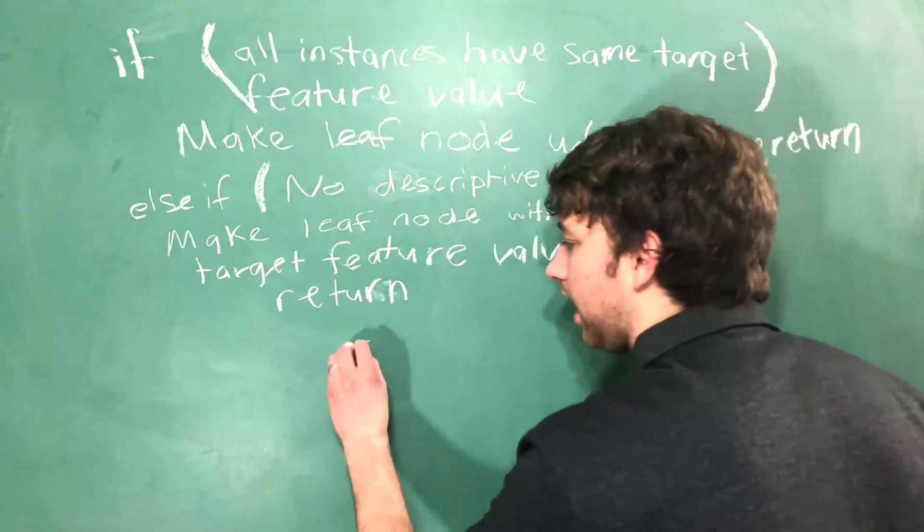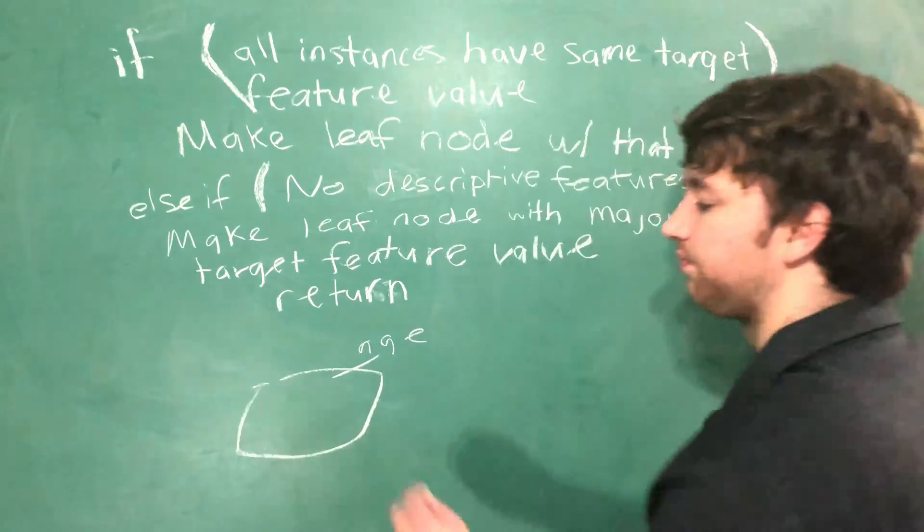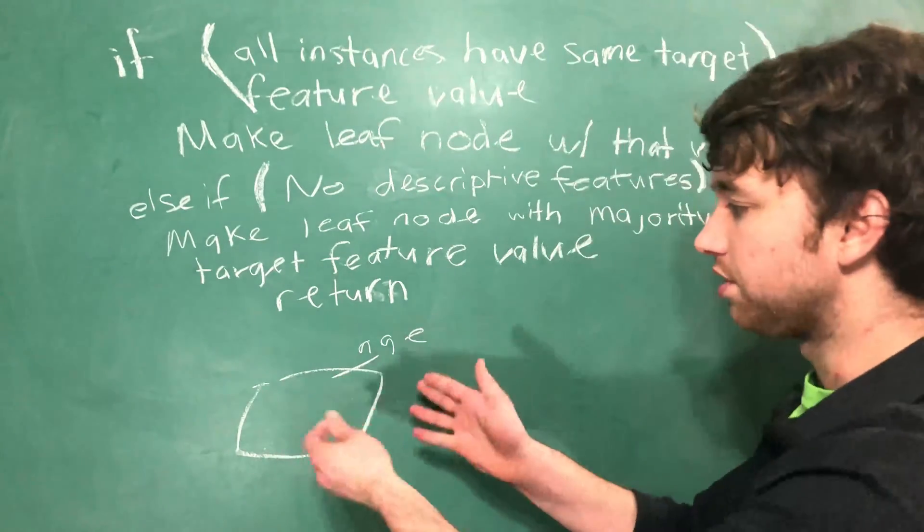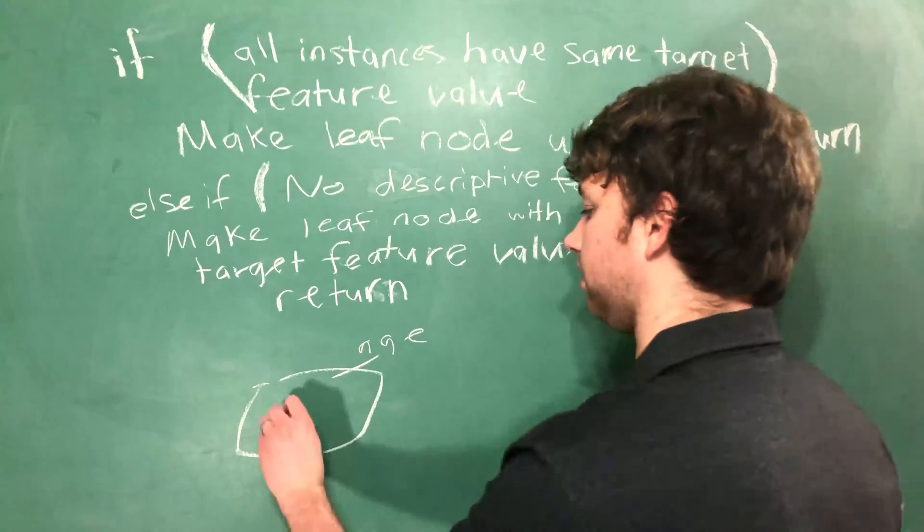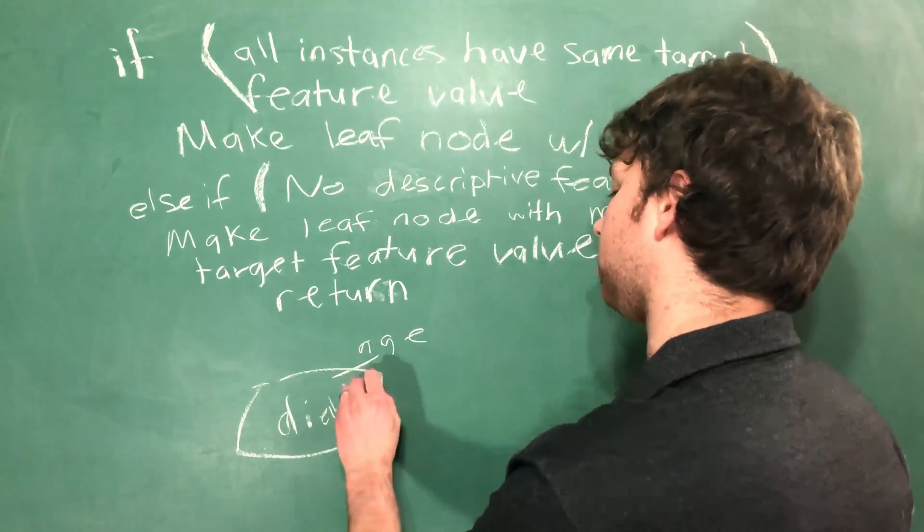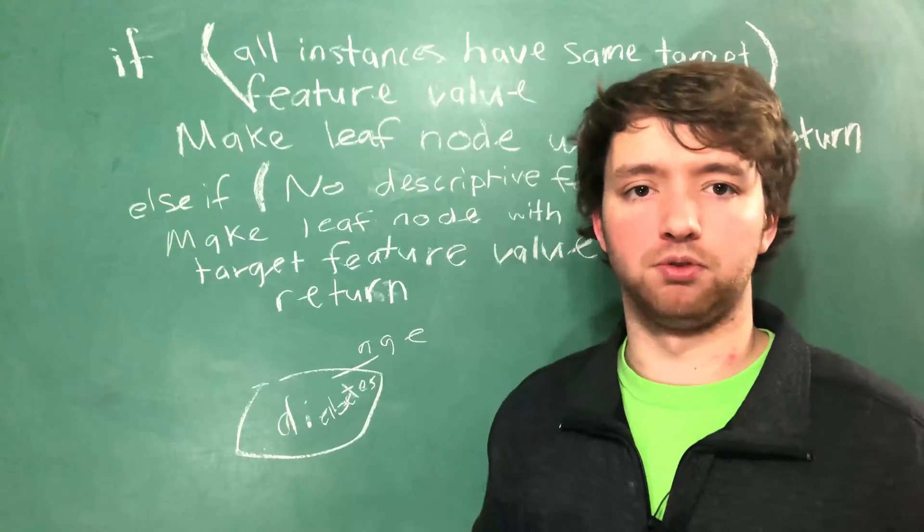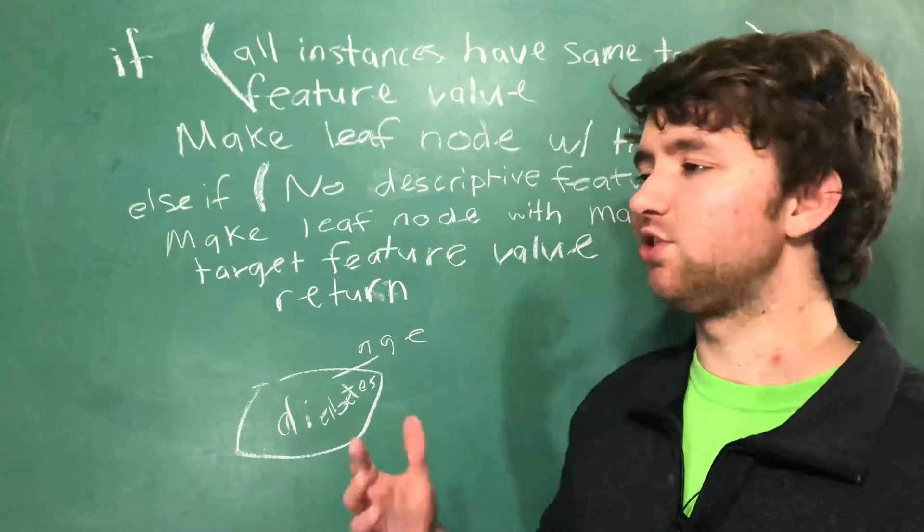So if we get down to age somewhere in our group and we split and we still have three or four descriptive features we could split on, but everyone so far already has the same target feature value, it's just going to end and go to a solution such as diabetes. So it's optimized to make the shallowest tree as possible which obviously is going to make things better, more efficient, and just good.